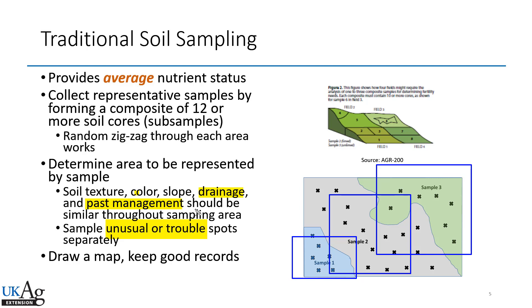Drawing a map and keeping good records is very important. When people come to me with soil test results for just one year, there's not much I can tell them. But if they've taken samples every third year, every other year, or even every year, we can look at the history of the results. If they came from the same areas in the field, we can draw conclusions about the nutrient management plan and how that field specifically reacts to input.